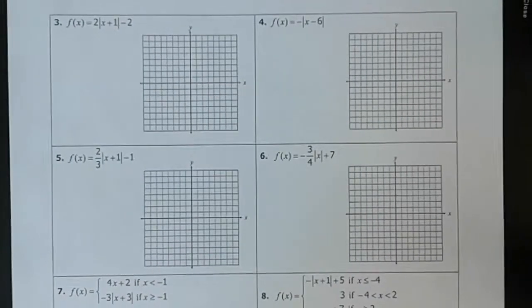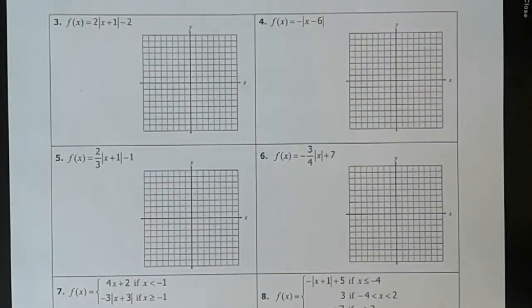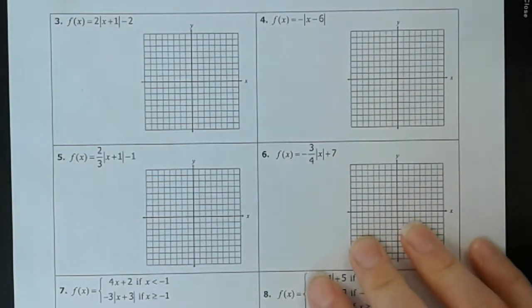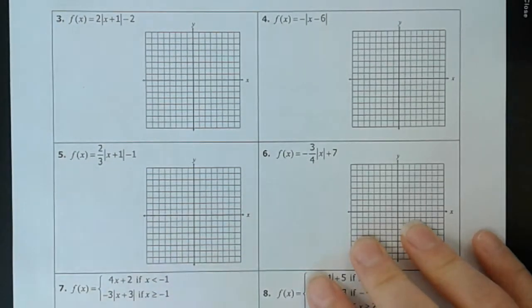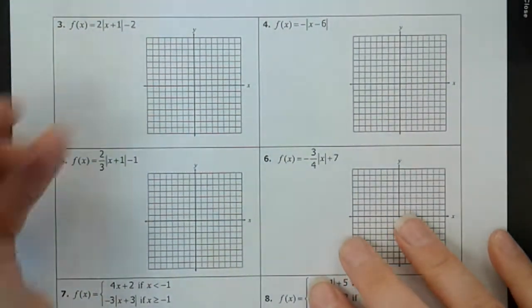Alright guys, this is the second half, so let's take a look at some of these absolute value functions. We're just going to use our vertex form to figure out what they are. So instead of using a table, we're just going to use our shortcuts.